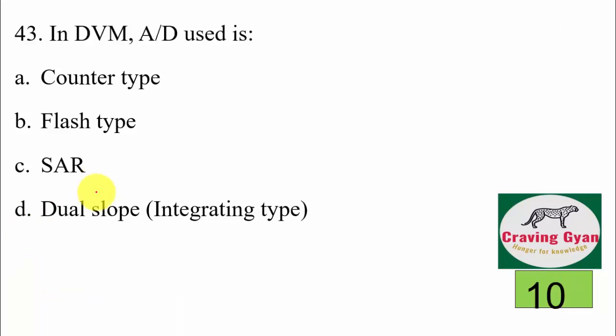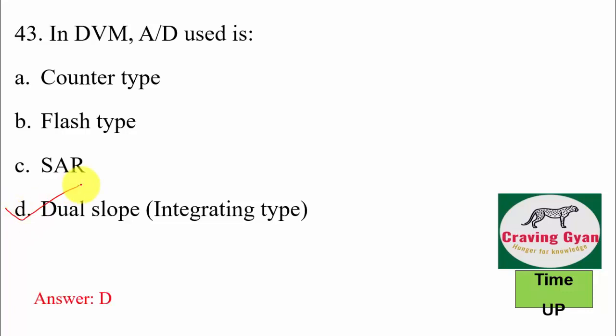43rd question: in a digital altimeter — also referred to as a DVM — which A-to-D converter is used? Counter type, flash type, SAR, or dual slope? In a digital altimeter, the dual slope or integrating type is used. Hence option D is correct.